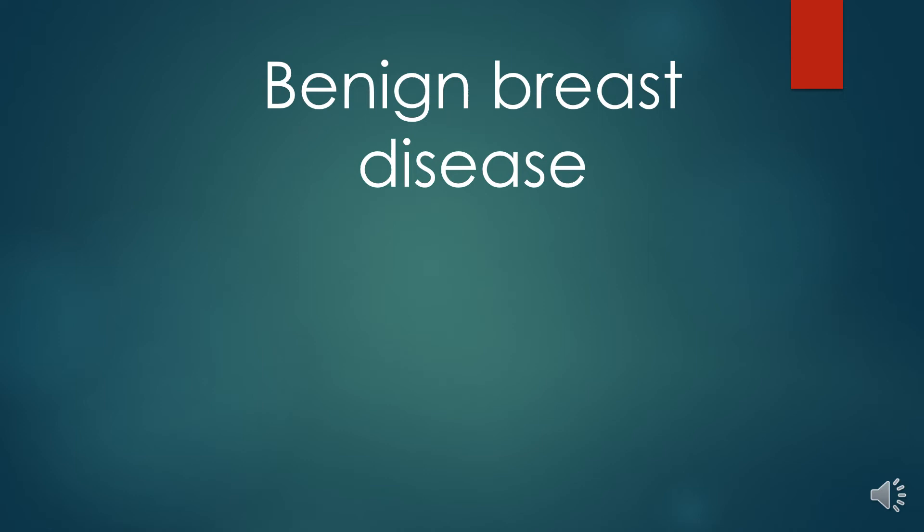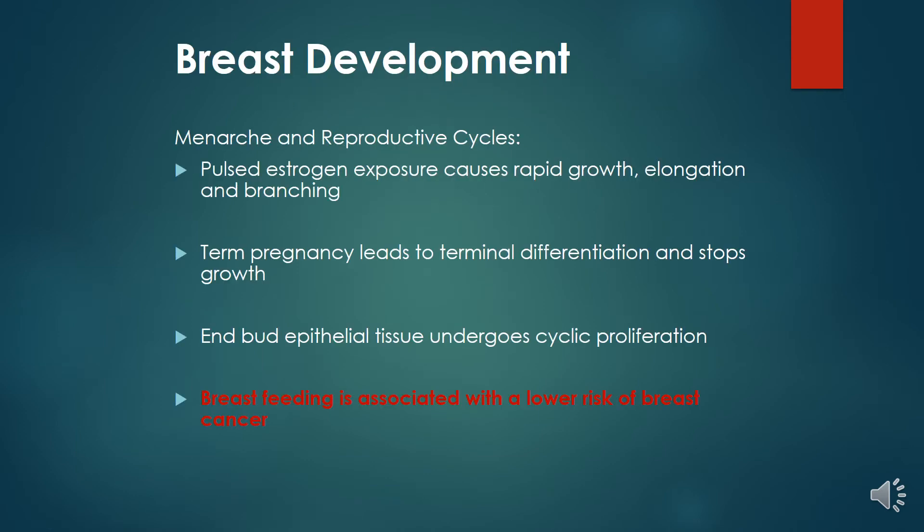Today we will talk about benign breast diseases. Development of the breast starts with puberty — oestrogen exposure causes rapid growth, elongation, branching, and terminal bud formation. Pregnancy leads to terminal differentiation and stops growth. The end bud epithelial tissue undergoes cyclic proliferation. Breastfeeding is associated with a lower risk of breast cancer — that's very important to understand.